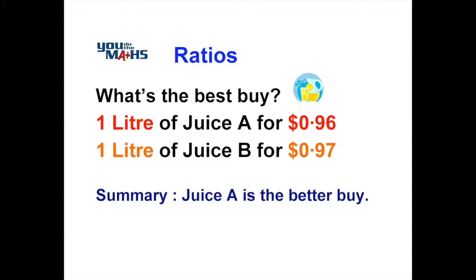If you're comparing other quantities and want to work out the best price, you need to convert both quantities to the same unit — it might be one litre, or it might be one item each. Whatever it is, check the units to make sure they're the same to get the price per one unit. Then you can compare the two items to work out which one is cheaper.